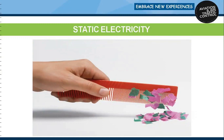Electricity is often described as being either static or dynamic. The difference between the two is based simply on whether the electrons are at rest or in motion. Static electricity is a buildup of an electrical charge on the surface of an object. It is considered static due to the fact that there is no current flowing, as in alternating current or direct current electricity.